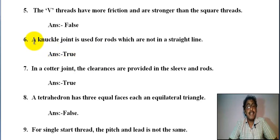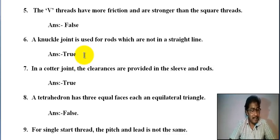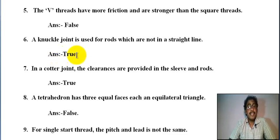Number six: a knuckle joint is used for rods which are not in a straight line. It is correct. Here rods may not be in a line but whose axes intersect, so it is true.